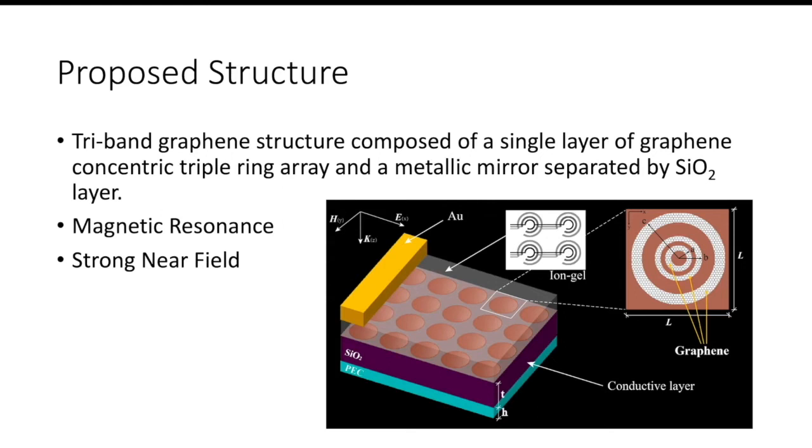The device operates based on the plasmonic resonances caused when the incident light illuminates the device. Anti-parallel currents are excited on both the top graphene layer and the bottom metallic mirror. Since the graphene and the silicon dioxide mirror are so close, a strong coupling effect produces an extremely strong near field that may be dissipated by the lossy graphene. I will show you later where I think I might have caught this very strong near field.